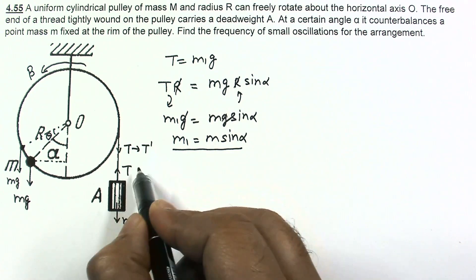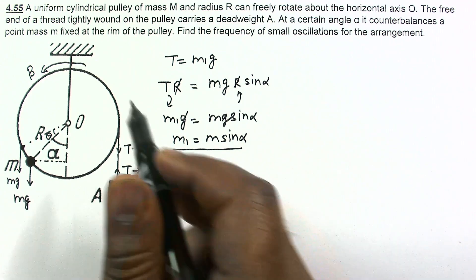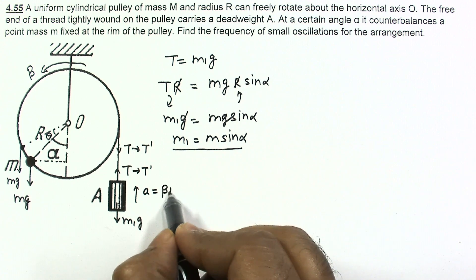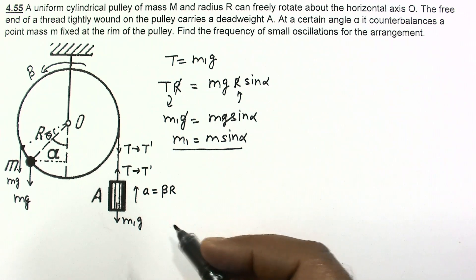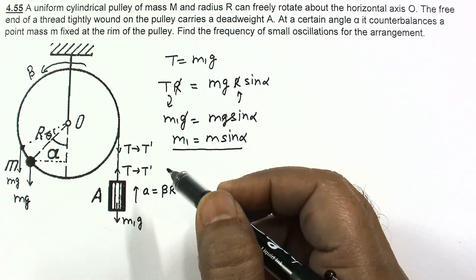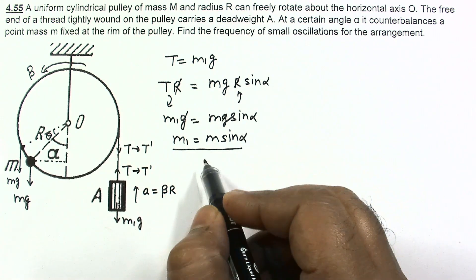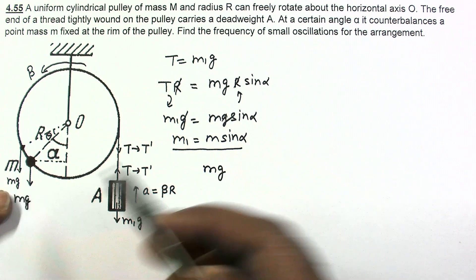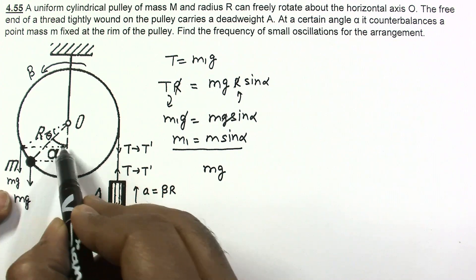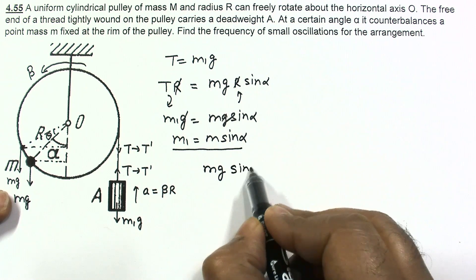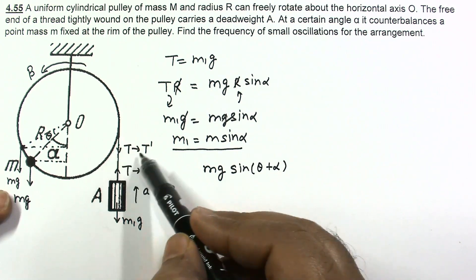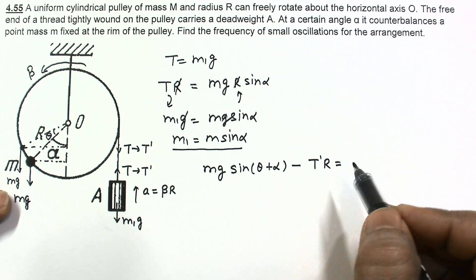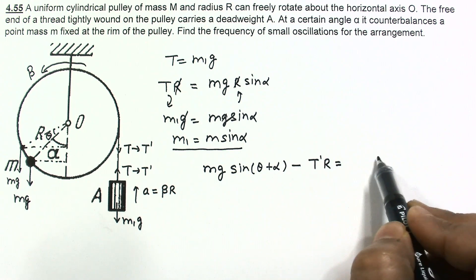The new tension is T'. The dead weight M1 accelerates upward with linear acceleration β·R, since there is no slipping. Writing the torque equation about O: the anticlockwise torque due to Mg has perpendicular distance R sin(θ + α), and the clockwise torque due to T' is T'·R. So: Mg·R sin(θ + α) − T'·R = I·β.